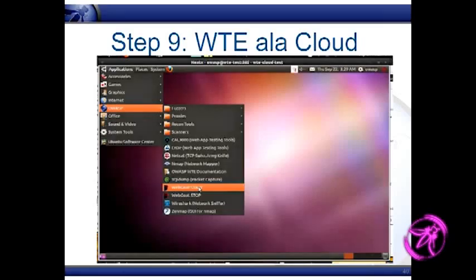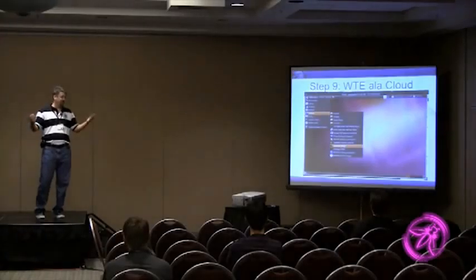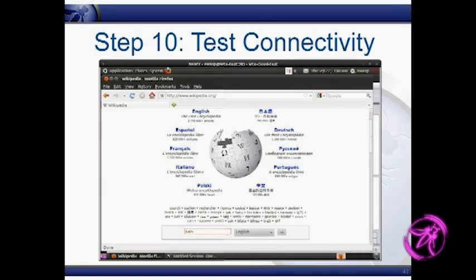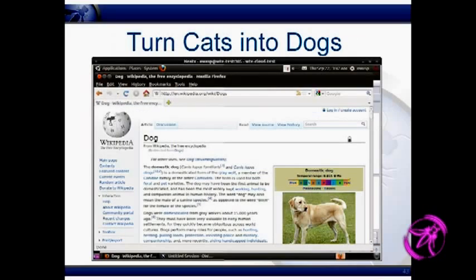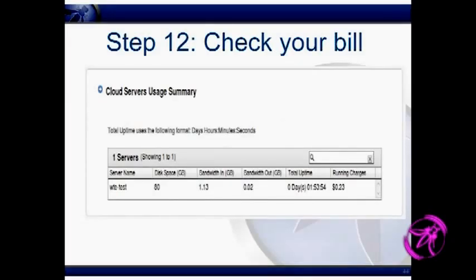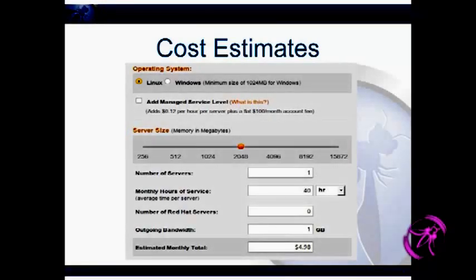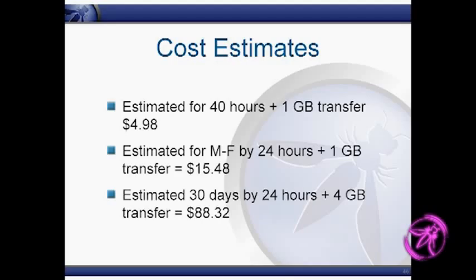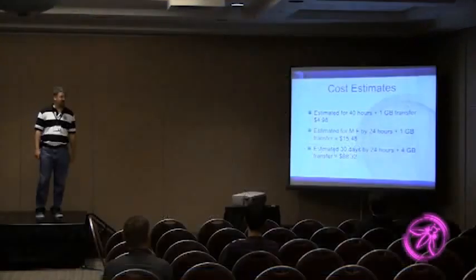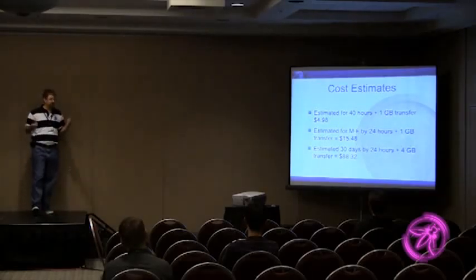And so if you get banned — or even better, you're on a kickoff call — just do this before the kickoff call. By the time the kickoff call is done, you've got your environment. I went to Wikipedia, put in 'cats,' captured it, changed 'cats' to 'dogs' — so I'm intercepting a proxy in the sky over across the hotel's crappy network. Setting this thing up and doing that test cost me 23 cents. It's ridiculously cheap. I did a little math: if you do a Linux system with 2GB of RAM and run it for 40 hours, that's five bucks. If you do that Monday through Friday for 24 hours a day and assume a gigabit of bandwidth — which is ridiculously high for web testing — you're looking at $15.48. If you do this for 30 days, 24 hours, and 4GB of bandwidth — which is also a ridiculous amount — it's $88. So you can get a testing platform up for nothing, and quickly.